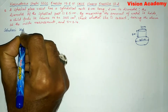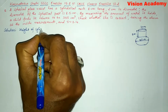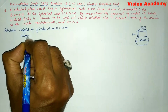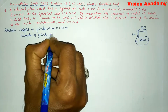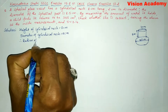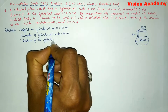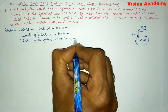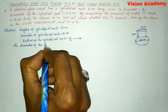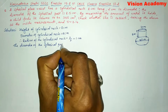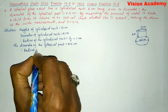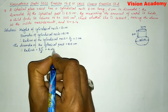Now let us write the given values. Height of cylindrical neck is equal to 8 cm. Diameter of cylindrical neck is equal to 2 cm. Therefore, radius of cylindrical neck is equal to 2 divided by 2, which is equal to 1 cm. Diameter of the spherical part is equal to 8.5 cm, therefore radius is equal to 8.5 divided by 2, which gives us 4.25 cm.